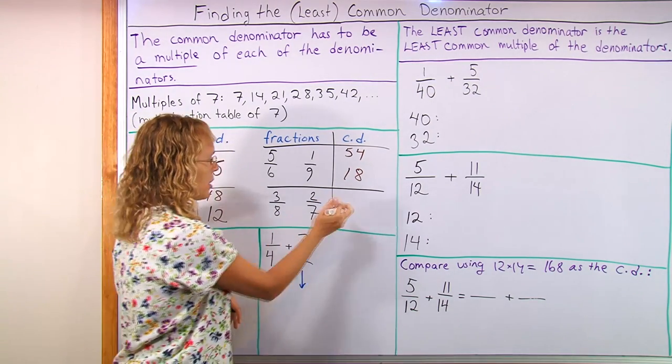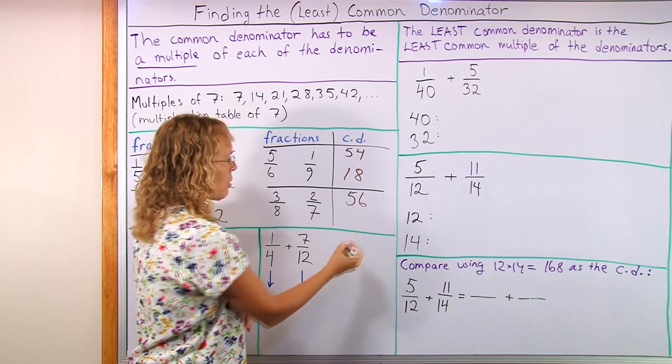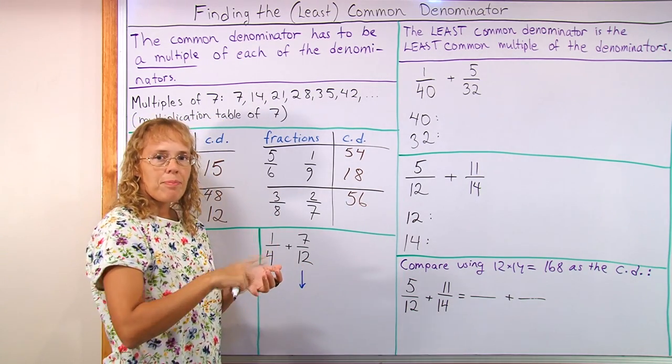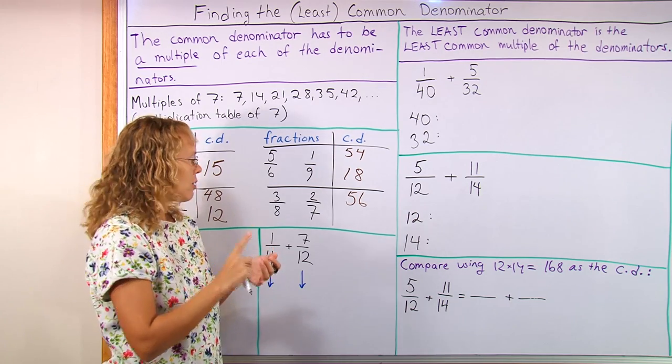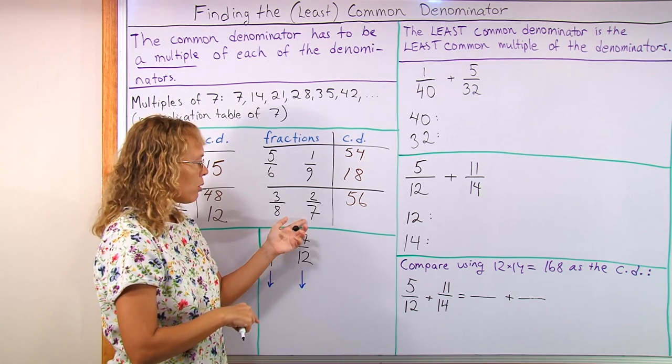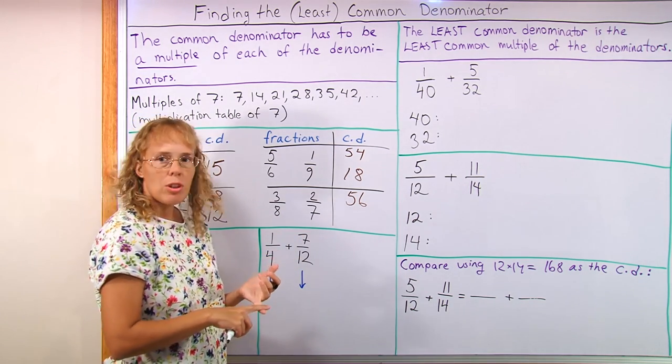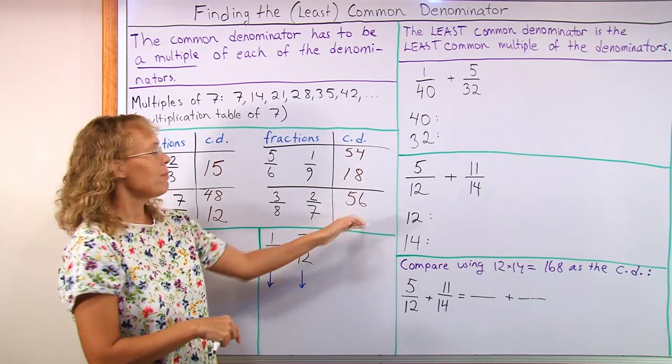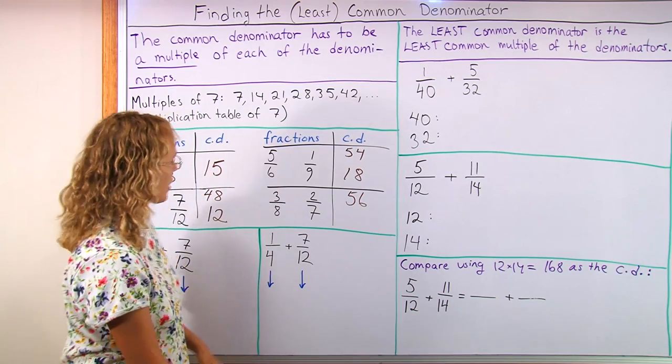8 and 7. 8 times 7 is 56. Would there be any smaller ones? Then you can check. 8, 16, 24, 32. No, none of those are in the table of 7. 40 is not. 48 is not. 56 is the first one. Okay, so 56.